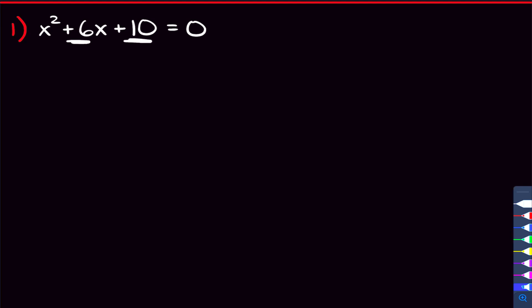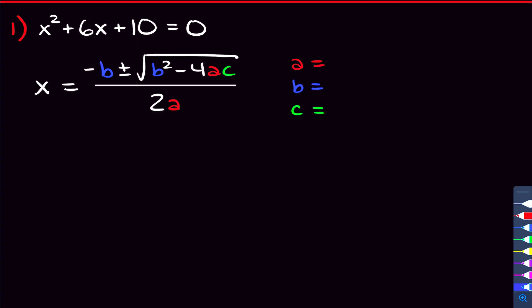Think about that for a second. Can you find those two numbers? Well, after doing some thinking, you might realize that you can't find two numbers that add to be 6 and multiply to be 10, no matter how hard you try. And so what you're going to have to do here is turn to the quadratic formula.